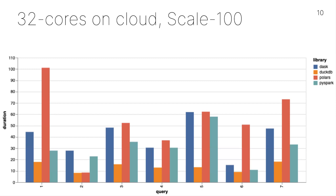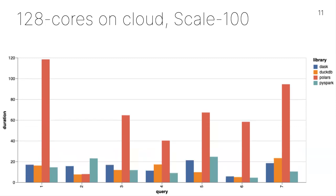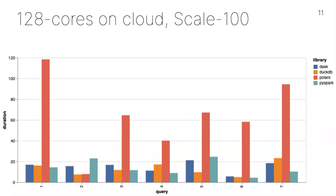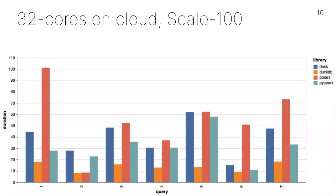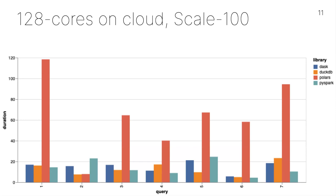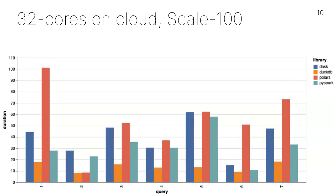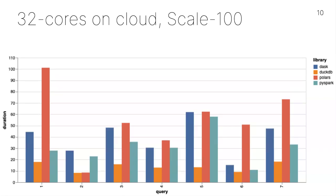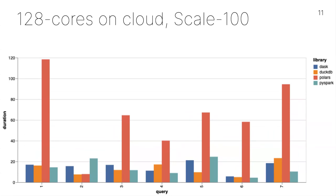Switching from 32 cores up to 128 cores: generally Dask and Spark come down, while Polars and DuckDB kind of stay where they are. The y-axis is roughly the same between these two charts. The story here is we've hit the scalability limit of DuckDB and Polars — they're not getting faster when we add more hardware. Whereas Dask and Spark do increase as we add hardware. DuckDB can do the same performance with less hardware, which is impressive, but as we add more hardware Dask and Spark scale better.